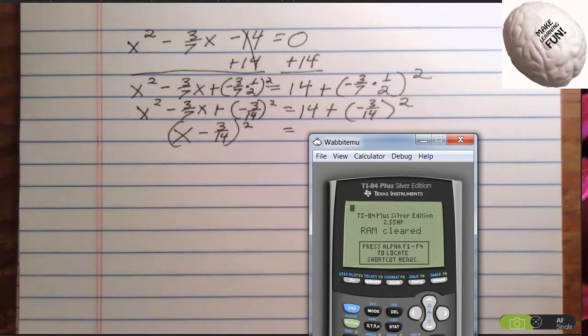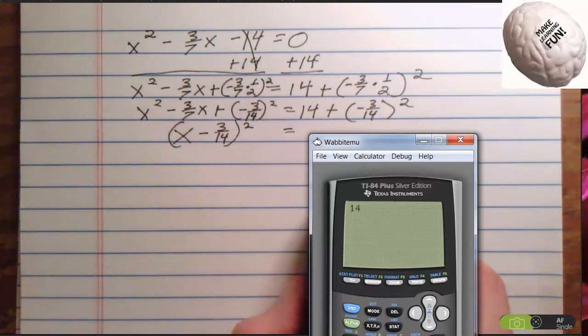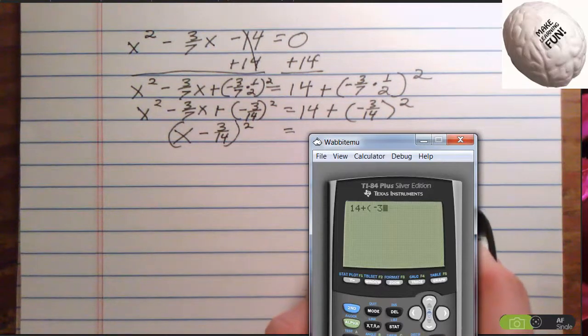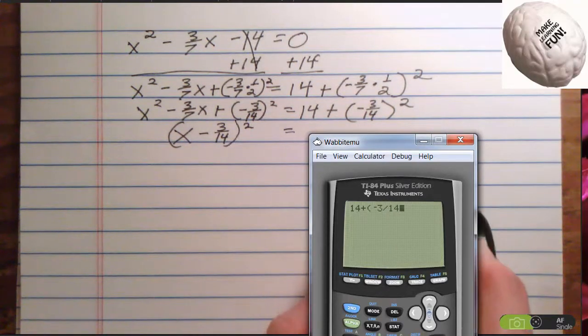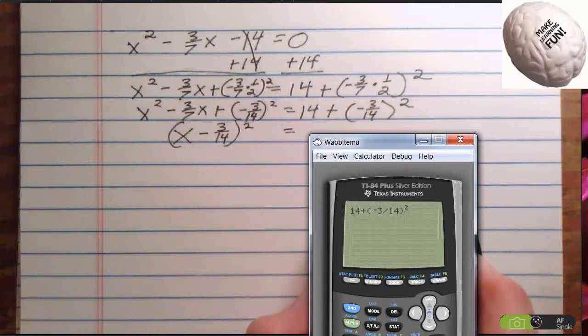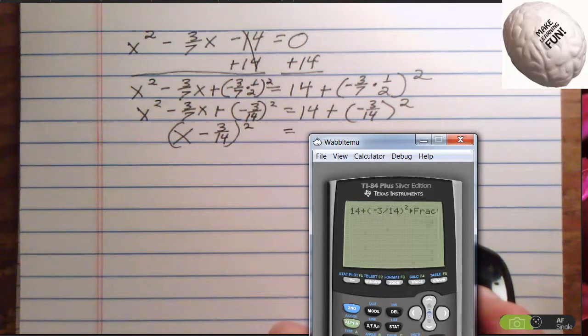I hate it when I do that. Again, 14 plus parentheses negative 3 divided by 14 parentheses closed squared. And now I'm pretty sure that's going to be a fraction. So I'm going to say math, frac, enter.